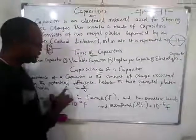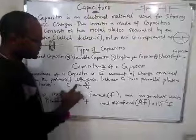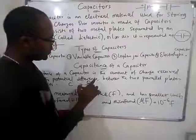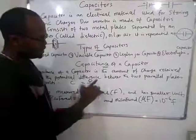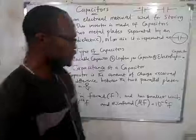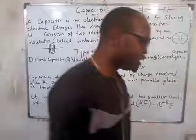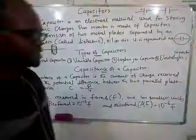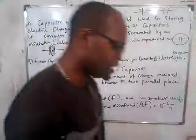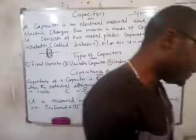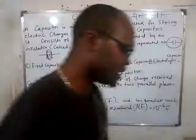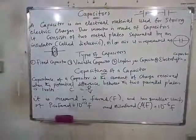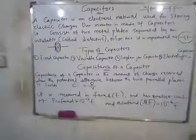So in subsequent calculations we are going to be using this formula: capacitance equals quantity of charge divided by voltage (potential difference). In the next class we are going to be looking at the factors that affect the capacitance of a capacitor.